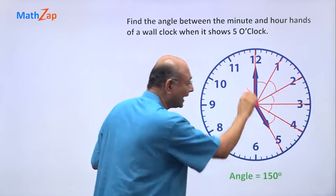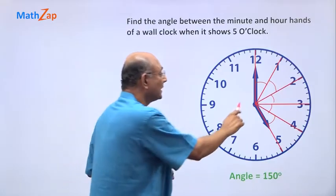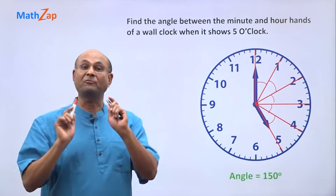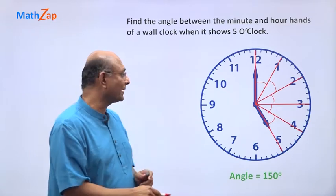1, 2, 3, 4, 5. I have got 5 small parts between the minute hand and the hour hand. I have got 5 equal small parts.